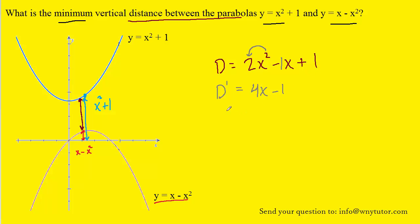So the final derivative is 4x minus 1. To continue to find the minimum, we're going to set the derivative equal to 0 and solve for x. And when we do that, we can see that x is equal to 1 fourth.